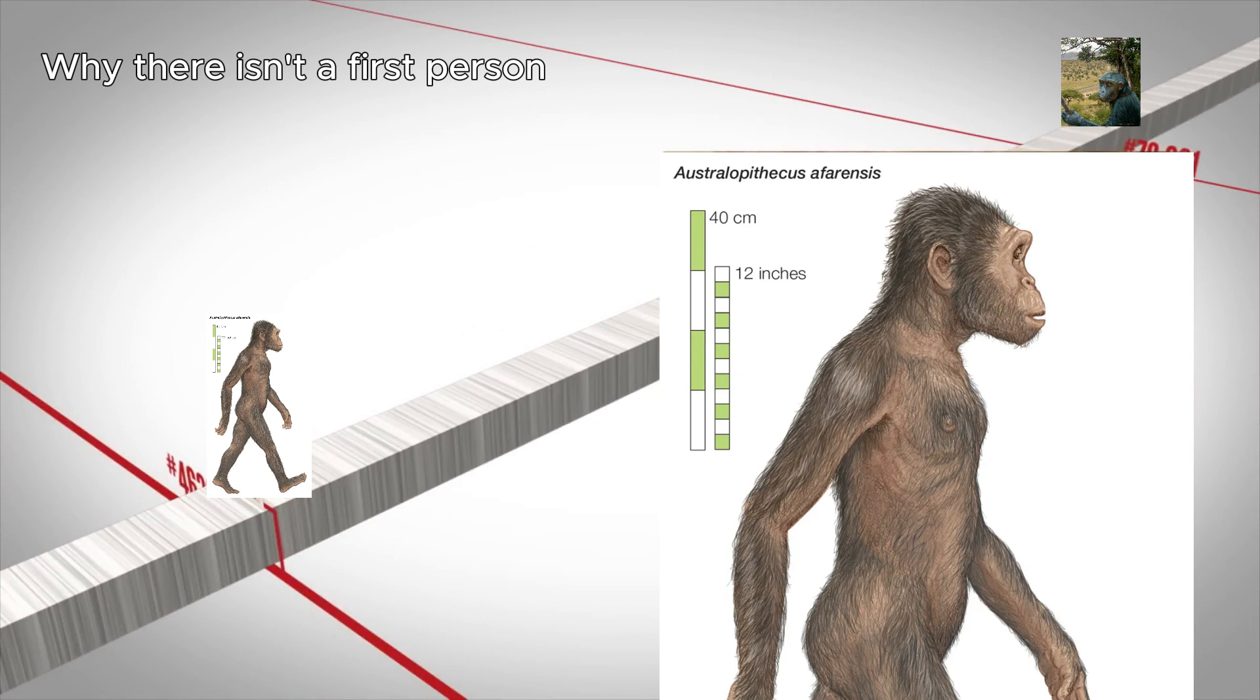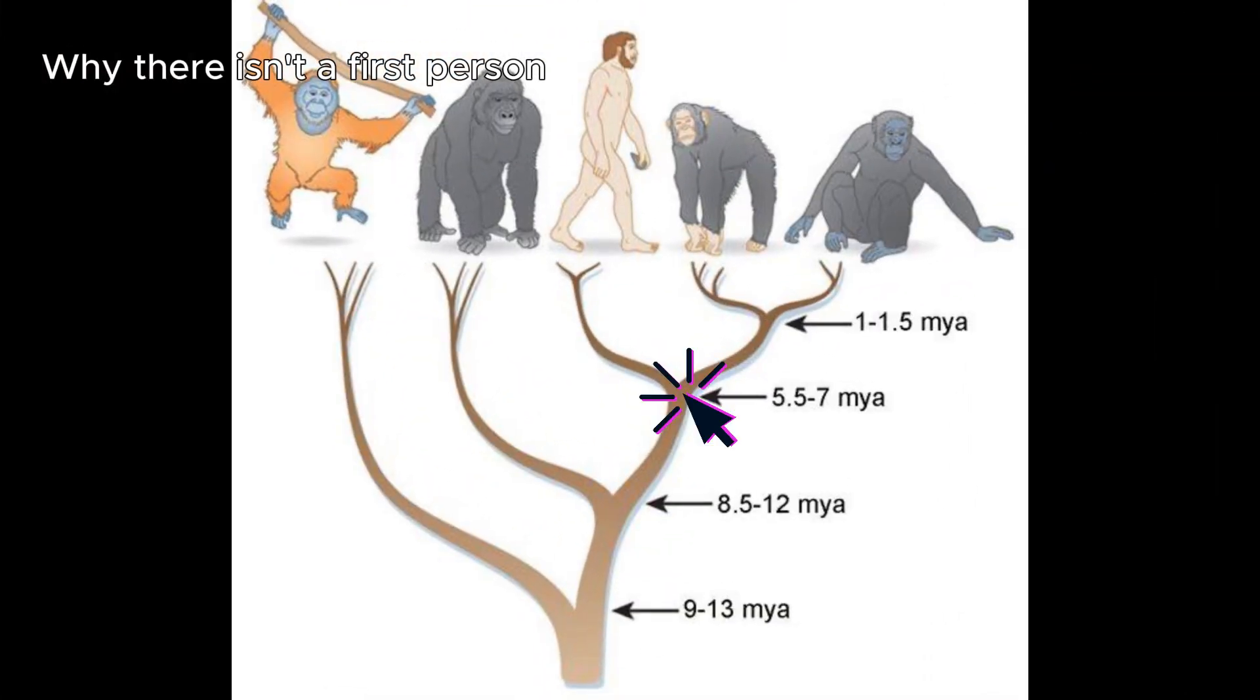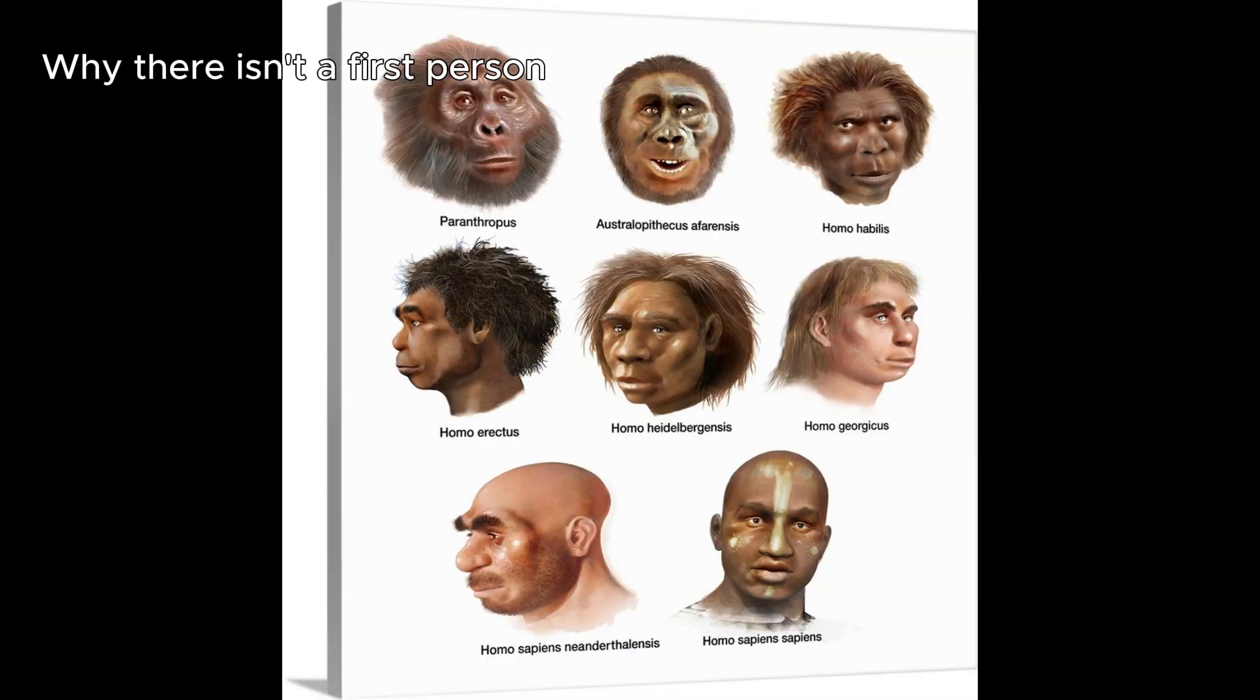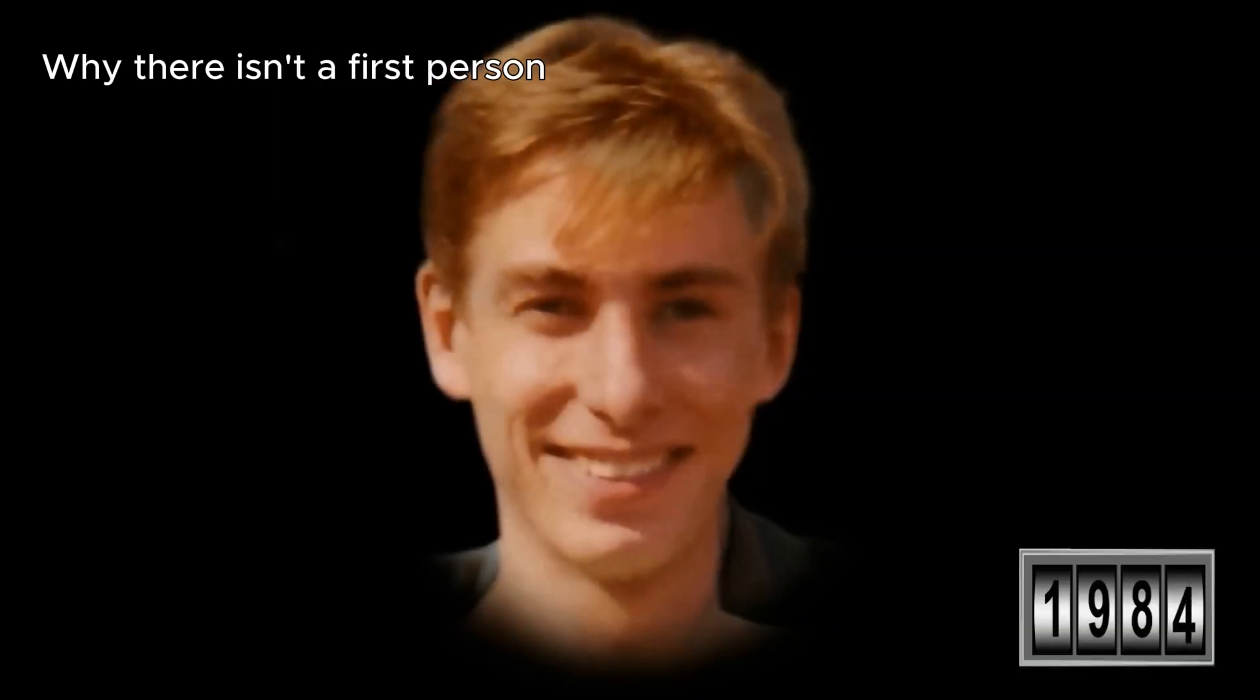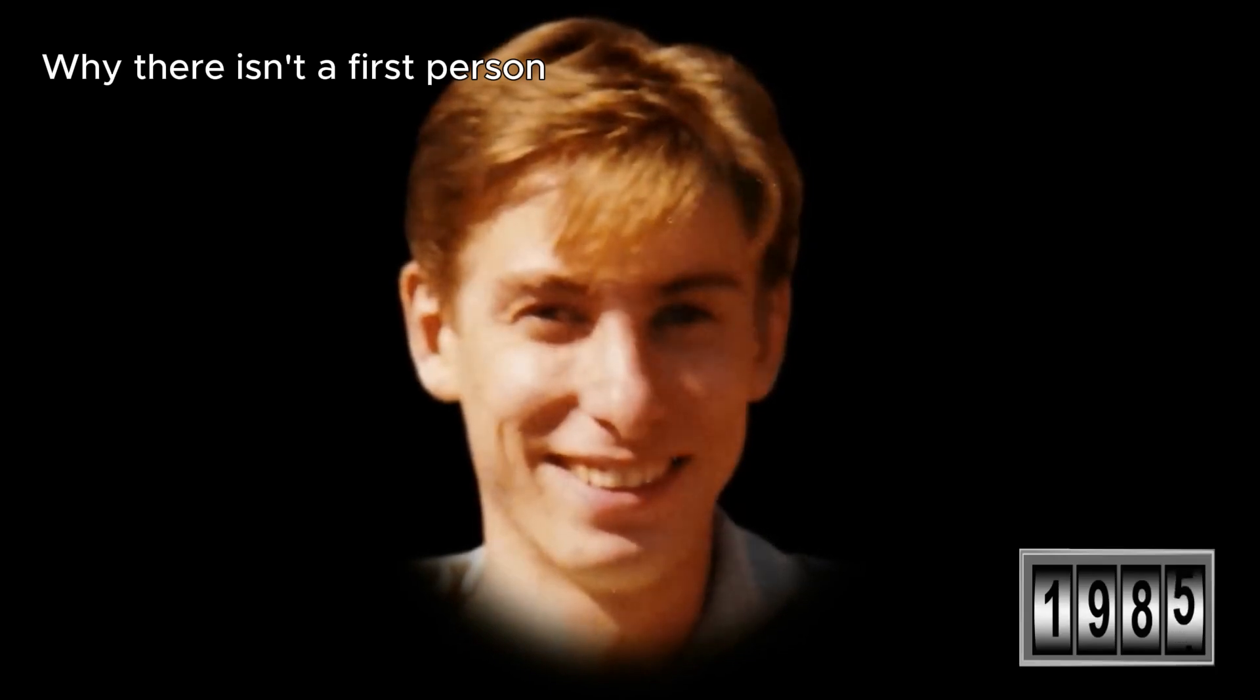If you go far back enough, you'll see that we actually share ancestry with chimpanzees. And since our chimp divergence, several human species have branched out, with all of them going extinct except for us. And evolution is always happening, just like we're always aging. It's just a gradual process, just like we're aging gradually.